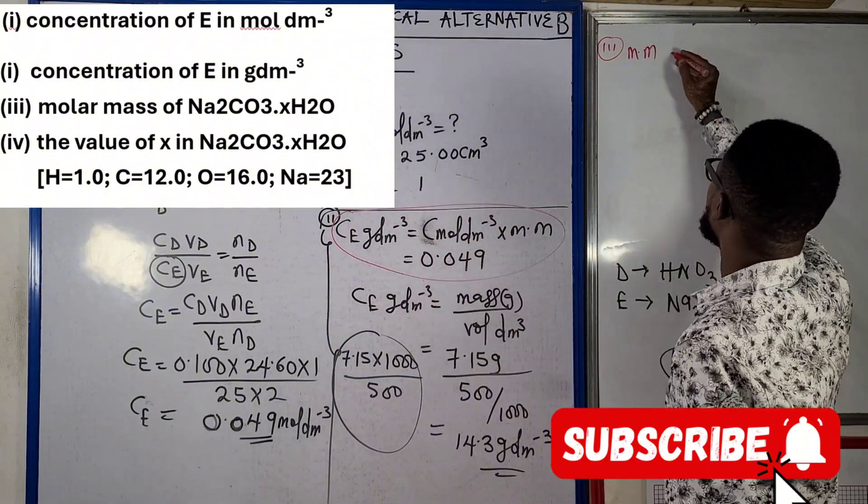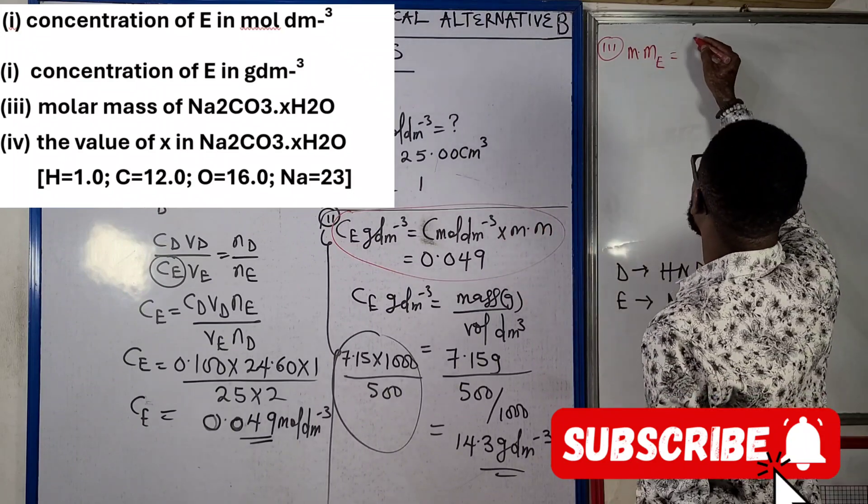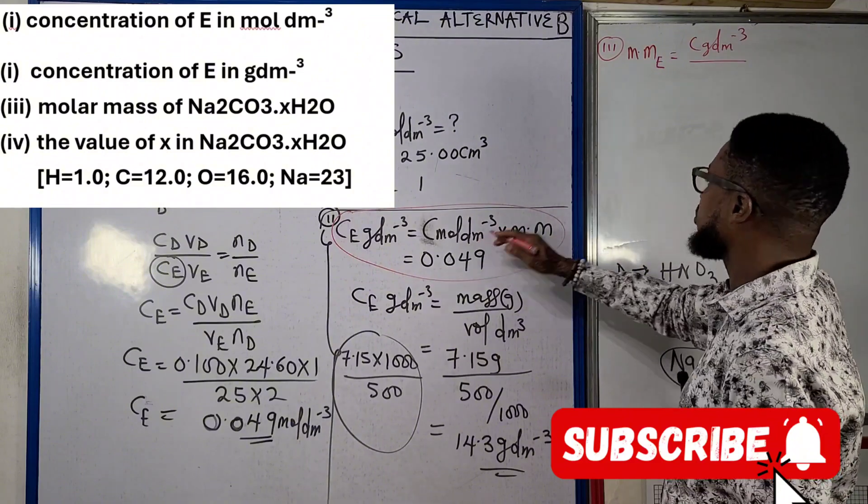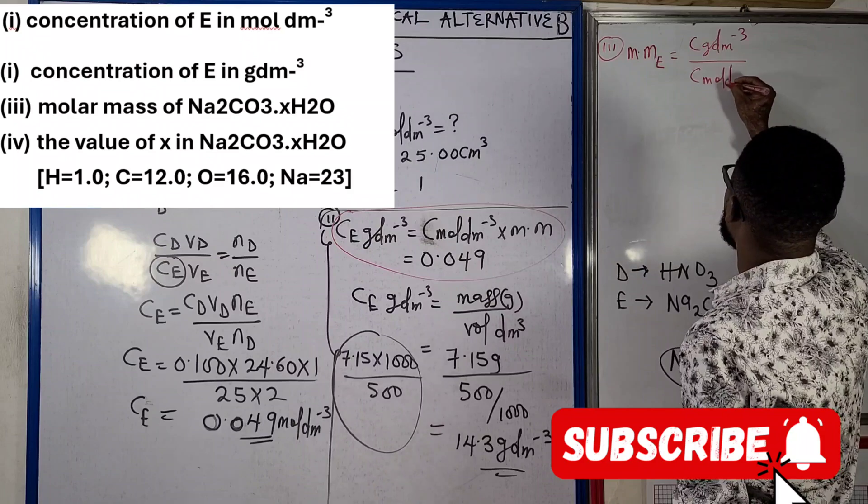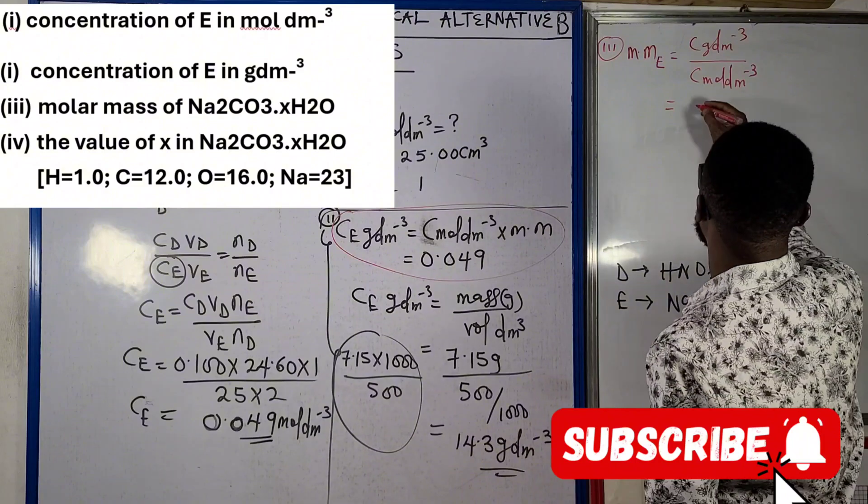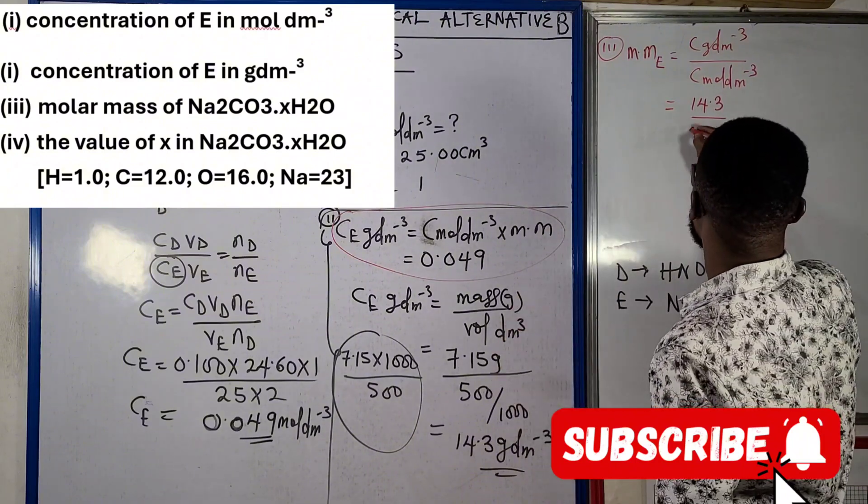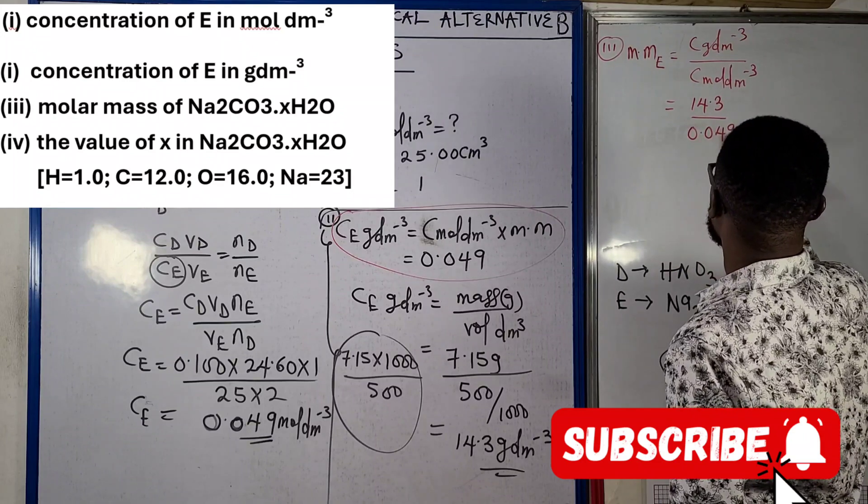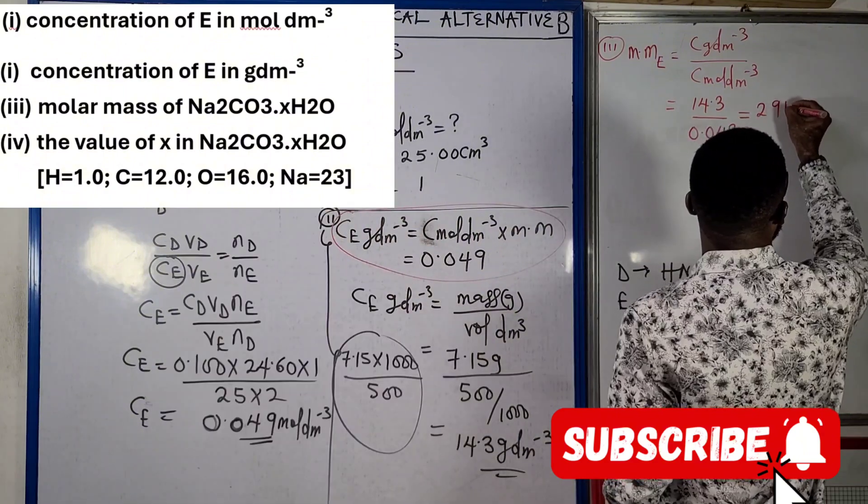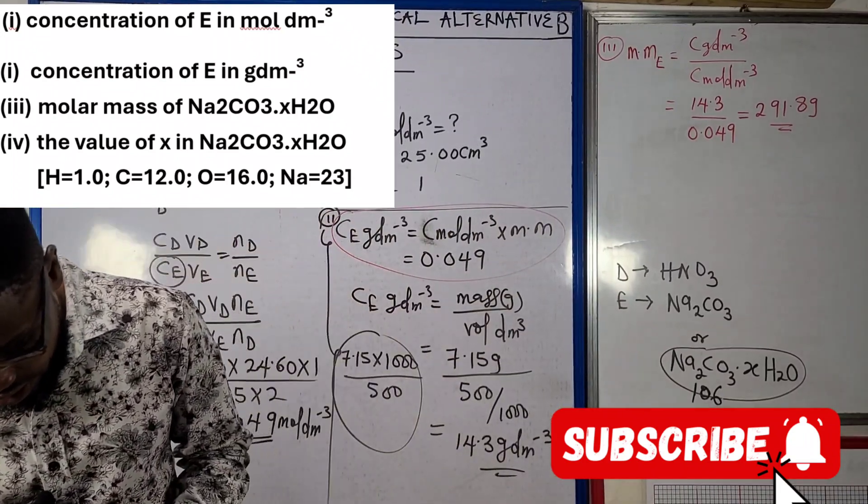Molar mass of E means that we're going to be saying concentration in gram per dm³ divided by concentration in mole per dm³. So that means concentration in gram per dm³ here is 14.3, concentration in mole per dm³ is 0.049. When we compute this, what we are going to get is 291.8 gram, and that ends question three.